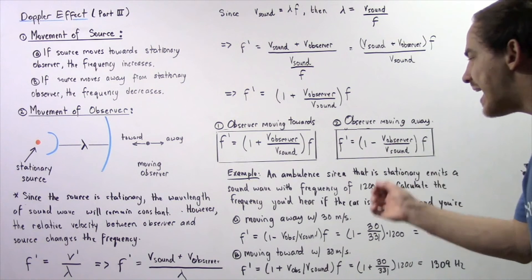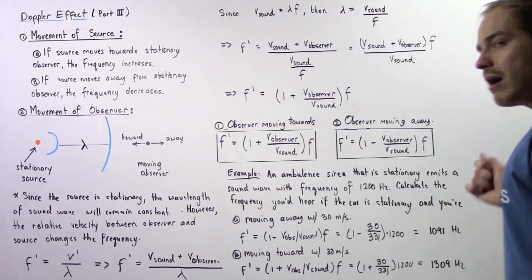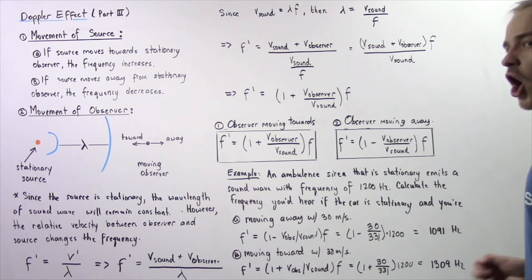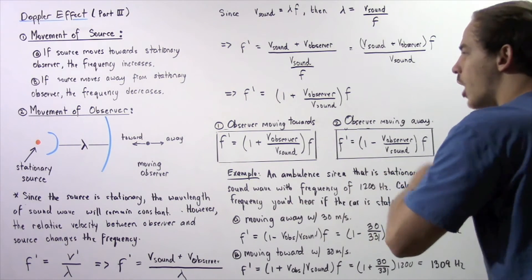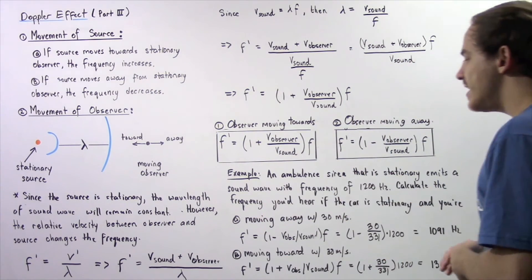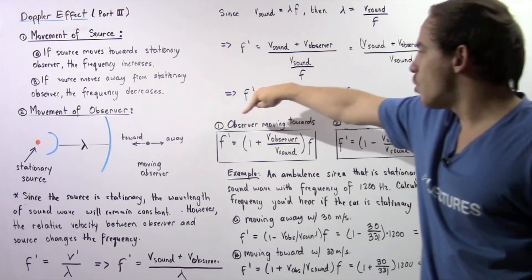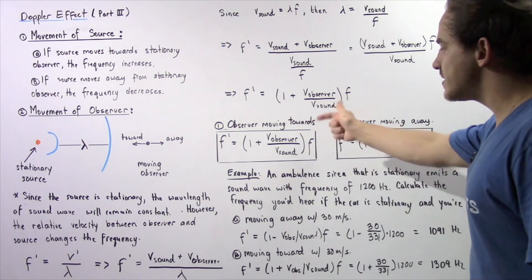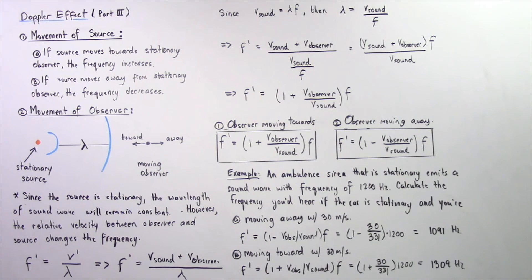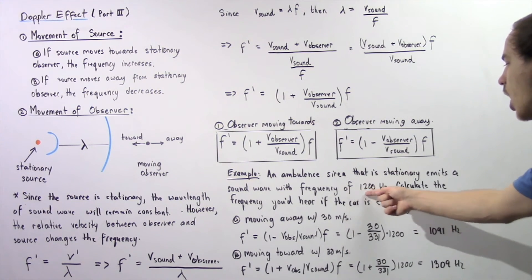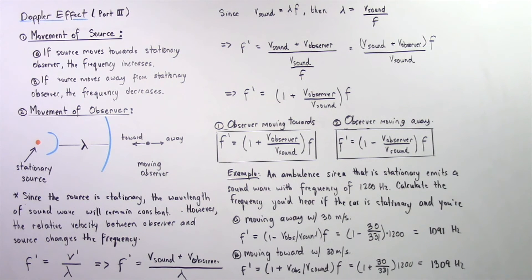Let's look at an example. An ambulance siren is stationary and emits a sound wave with a frequency of 1200 hertz. Calculate the new frequency heard if you are (a) moving away from the stationary source at 30 meters per second, and (b) moving towards the stationary source at 30 meters per second. For part (a), using the formula with a negative sign, with v_observer = 30 m/s and v_sound = 331 m/s: f' = (1 minus 30/331) times 1200 Hz = 1091 Hz.